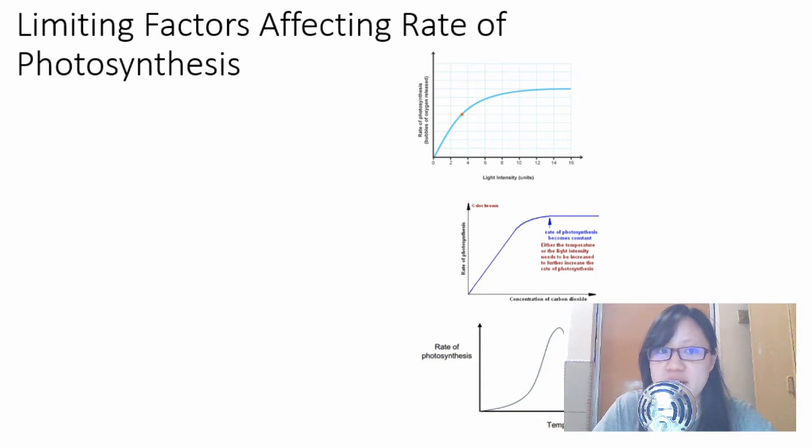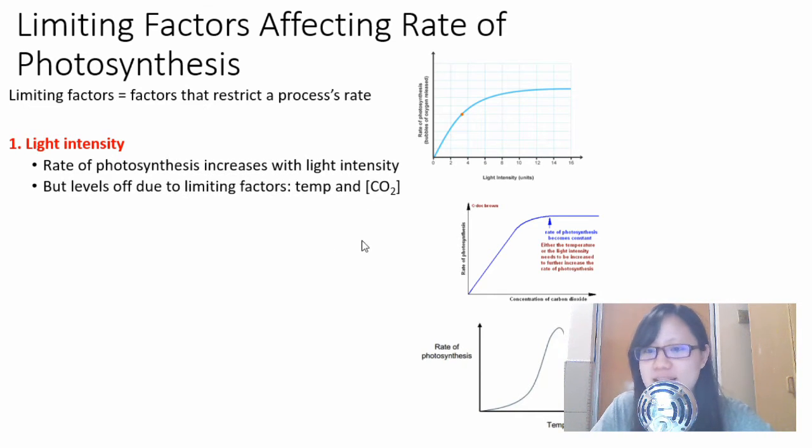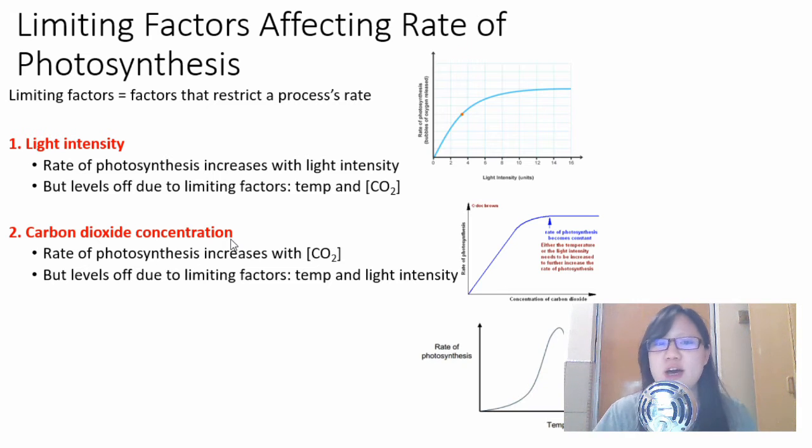When we talk about limiting factors, we're talking about factors that restrict a process's rate, and you know this already. The limiting factors here are pretty obvious: light intensity, carbon dioxide concentration, and temperature. You expect the rate of photosynthesis to increase with both light intensity and CO2 concentration because these are the initial things needed. But you also expect the graph to level off, to plateau. Why? Because there are actually other limiting factors present.